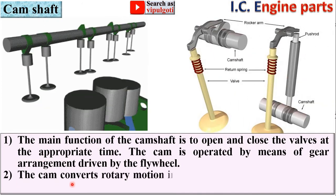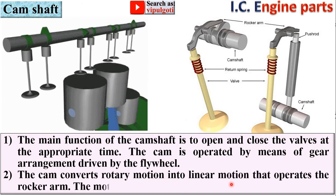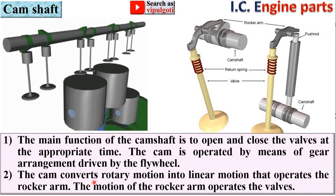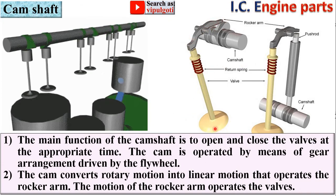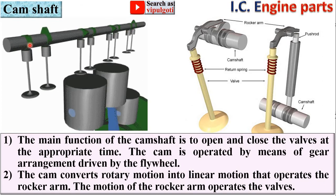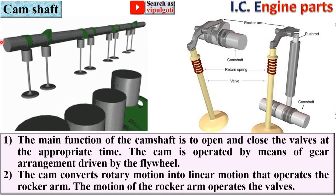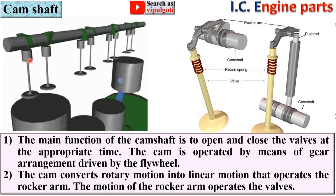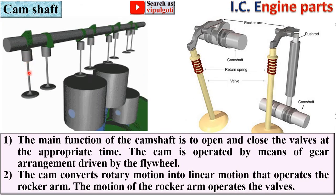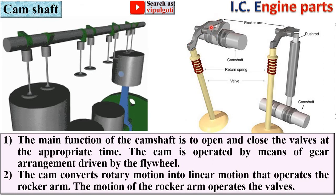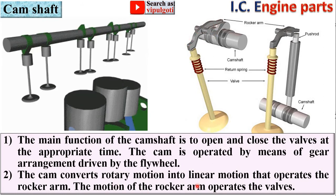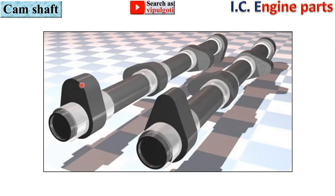The cam converts rotary motion into linear motion that operates the rocker arm, and the motion of the rocker arm operates the valves. Here you can see the cam provided on the camshaft converts the rotary motion into linear motion which operates the rocker arm, and the motion of the rocker arm operates the valves.